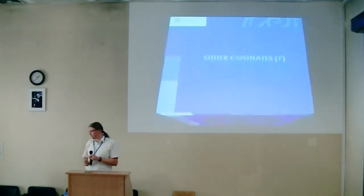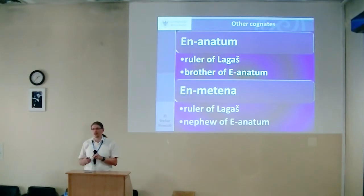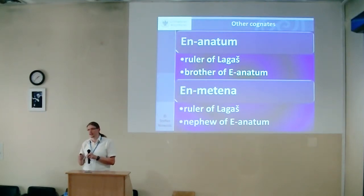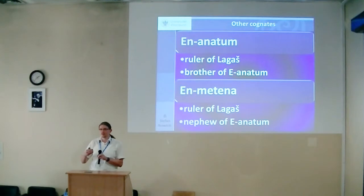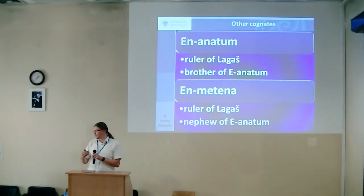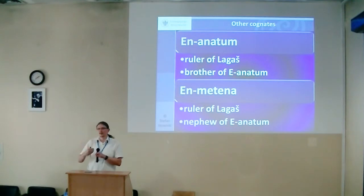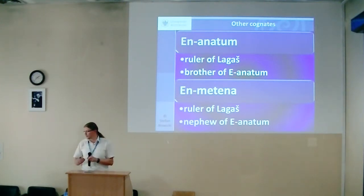We also find other kinship connections in the inscriptions. Eannatum is ruler of Lagash and brother of Eannatum, while Enmetena is ruler of Lagash and nephew of Eannatum. The reason for 'nephew' relates to the principle that legitimation of power should span at least two generations — but not two biological generations, rather two generations of kings. Before Enmetena stood En-an-atum his father, and before him stood Eannatum. So Enmetena is two generations of rulers removed, making him nephew of Eannatum.